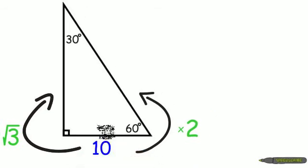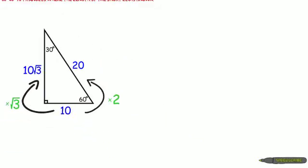To find the hypotenuse, we're going to double that length to get 20. And to find the longer leg, we're going to multiply that 10 by radical 3 to get 10 radical 3.